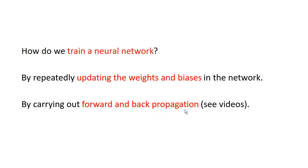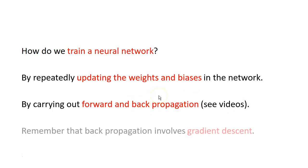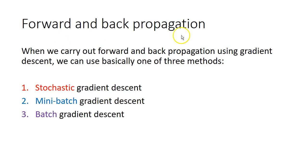This is not a video on forward and back propagation, so I suggest you see my previous videos where I go into quite a bit of detail on how we carry out forward and back propagation. But back propagation involves something called gradient descent, which is the way that we ultimately update the weights and biases. When we carry out forward and back propagation using gradient descent, we can use basically one of three methods: stochastic gradient descent, mini-batch, and batch gradient descent.